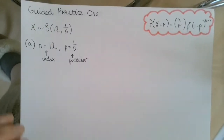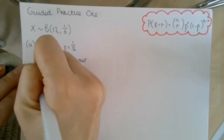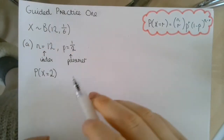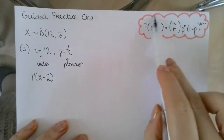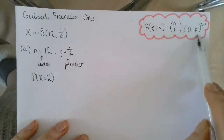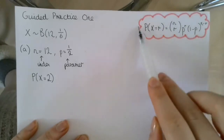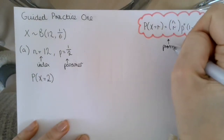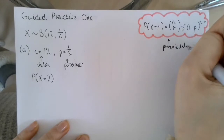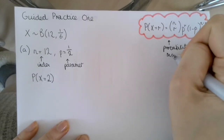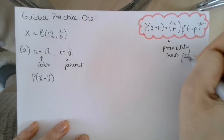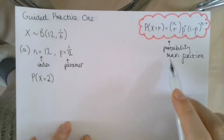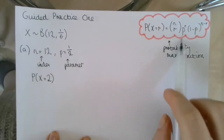For part A, we're asked to find the probability that X is equal to 2. We're going to use this equation for finding out the probability — this is called our probability mass function. This will tell us how to find the probability of a random variable with a binomial distribution.